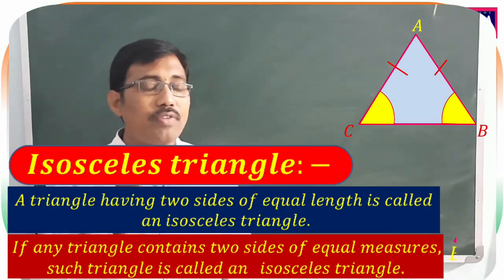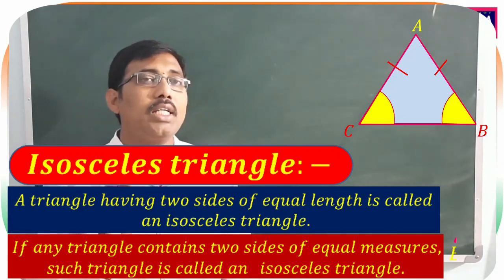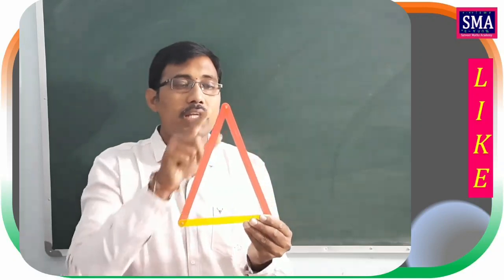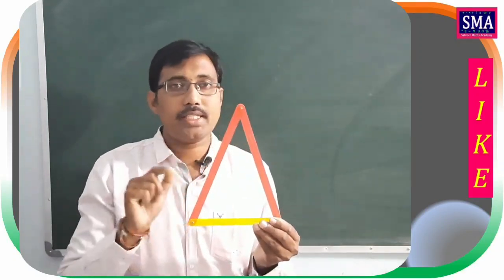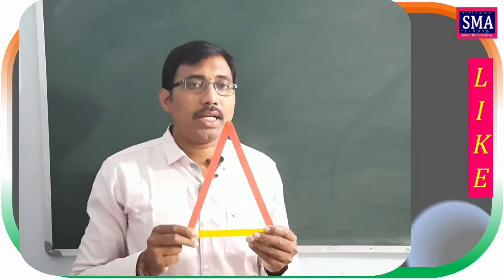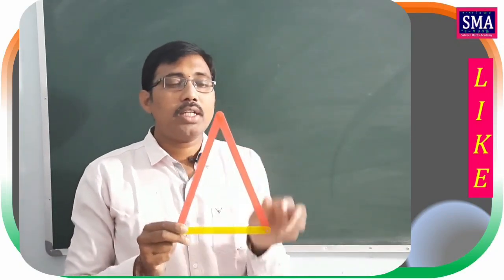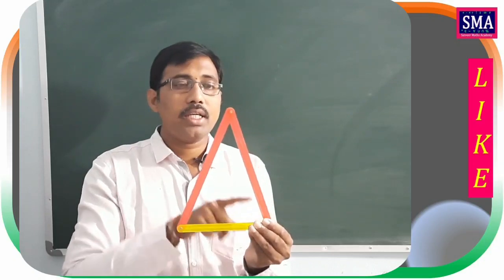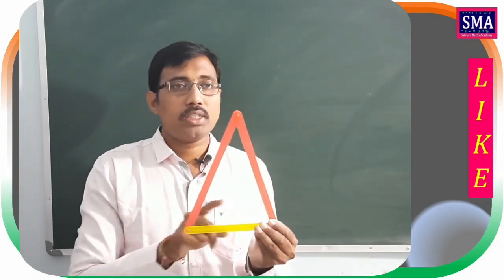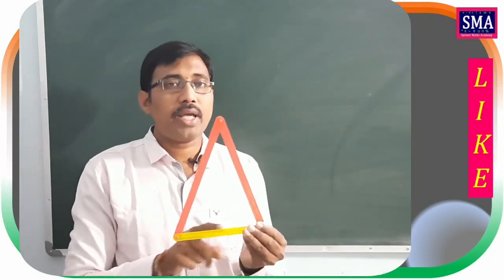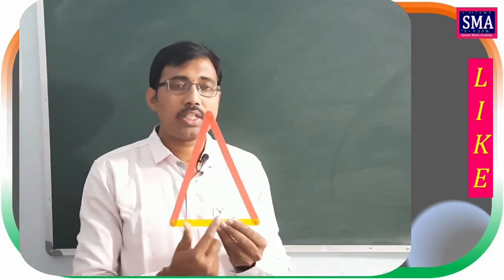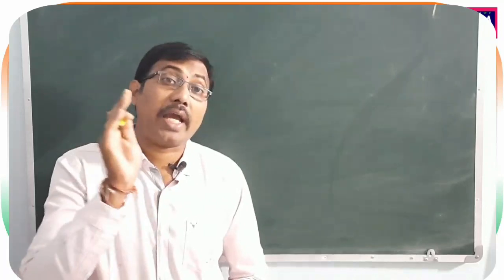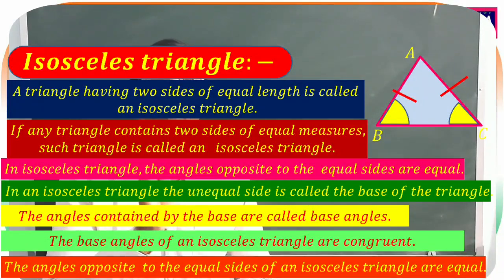In any triangle that contains two sides of equal measures, it is called an isosceles triangle. For example, in triangle ABC, AB = AC and BC is a different length. Since these two sides are equal, their opposite angles are also equal: AB is opposite angle C, and AC is opposite angle B, so angle B = angle C. The unequal side BC is called the base, and angles B and C are called the base angles.